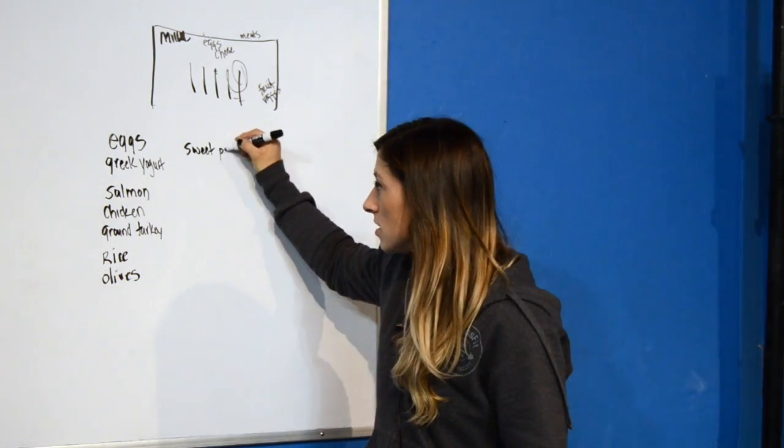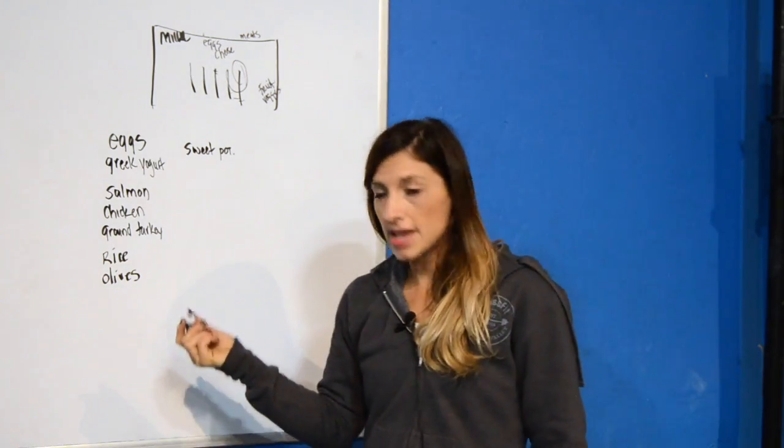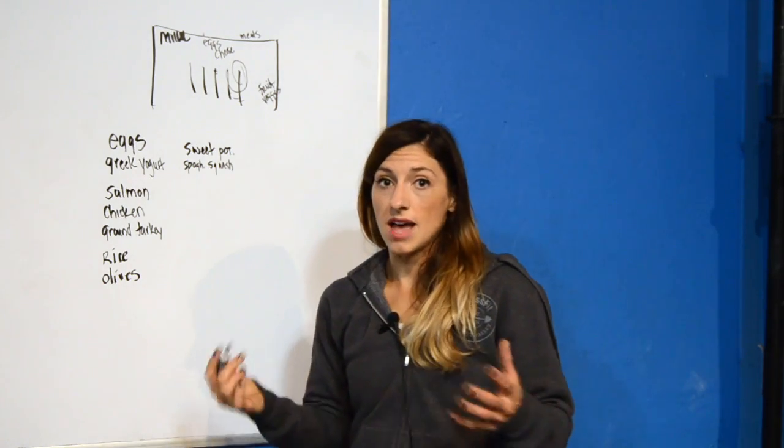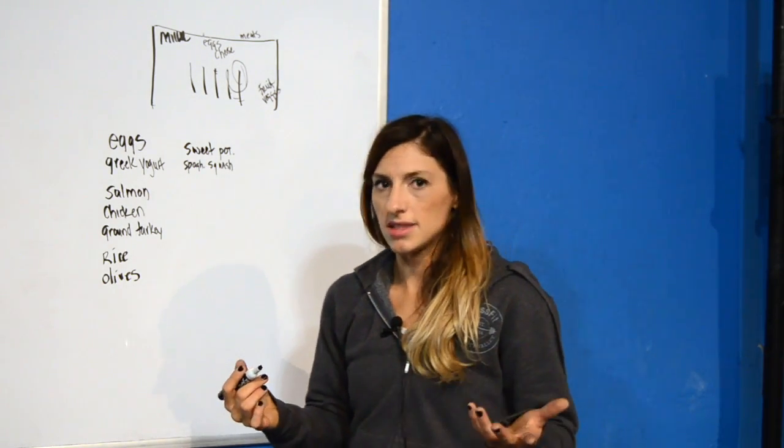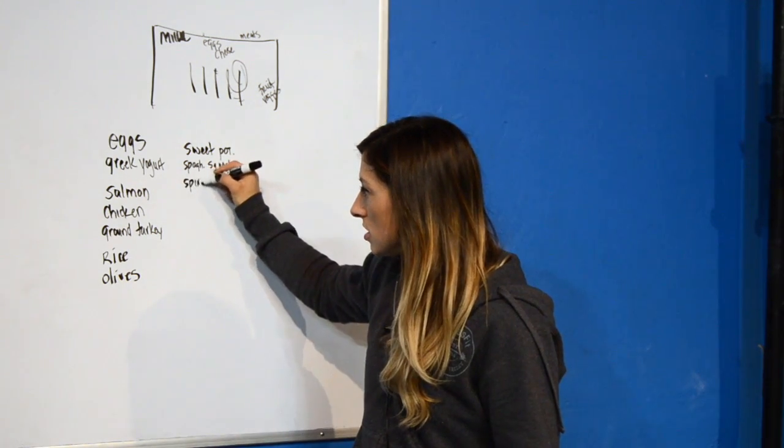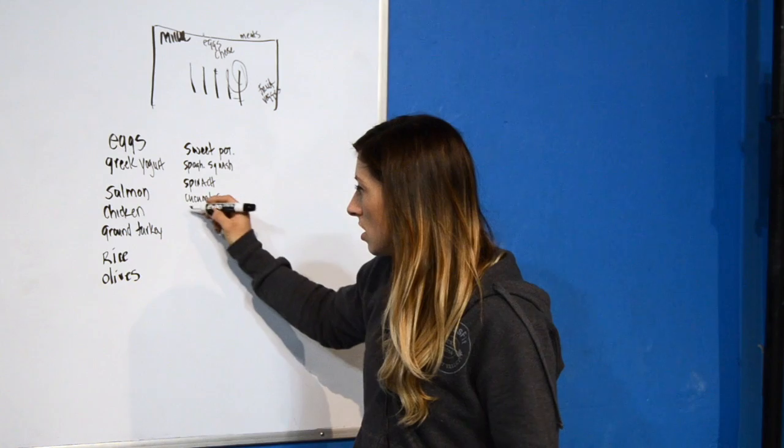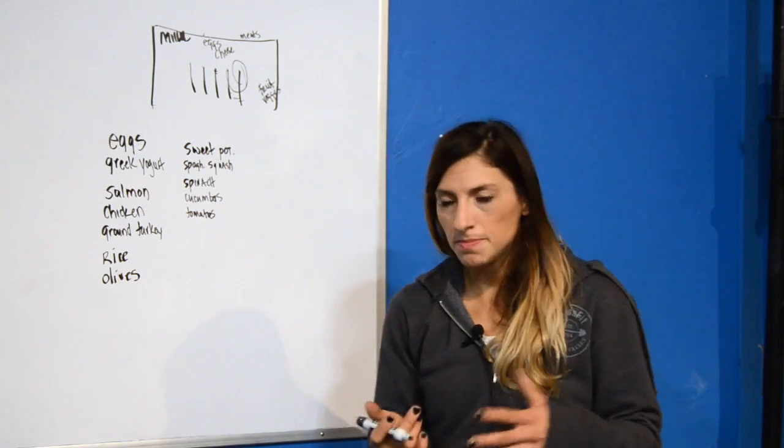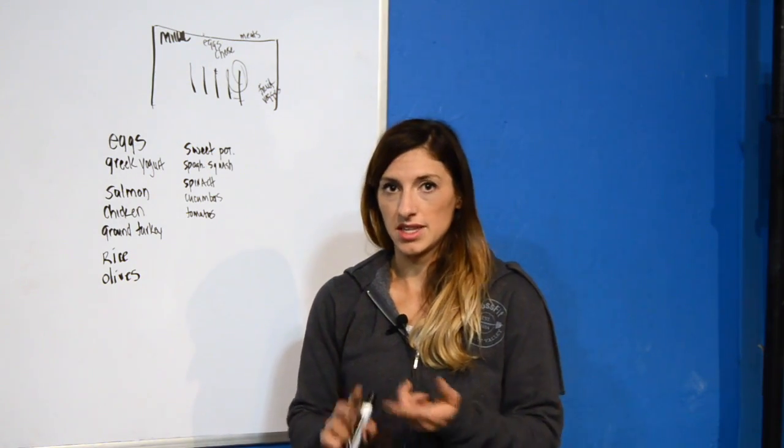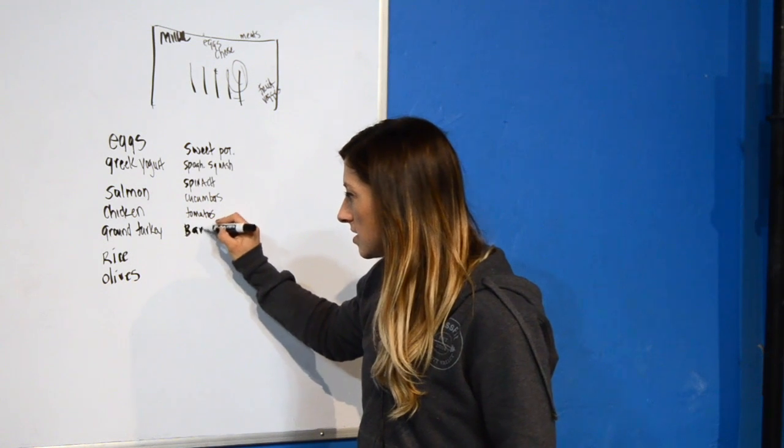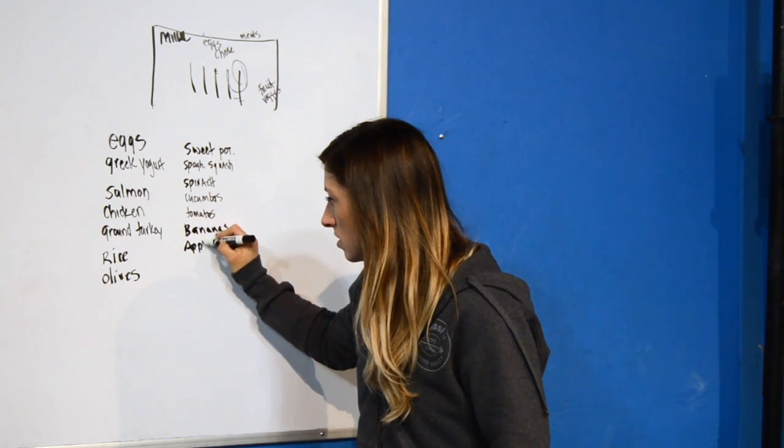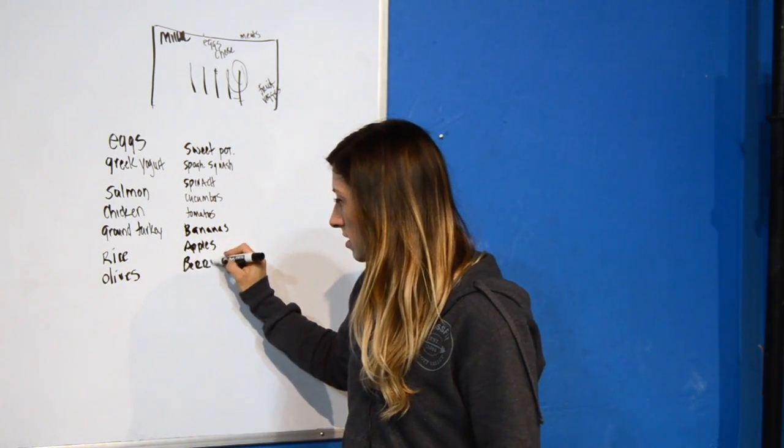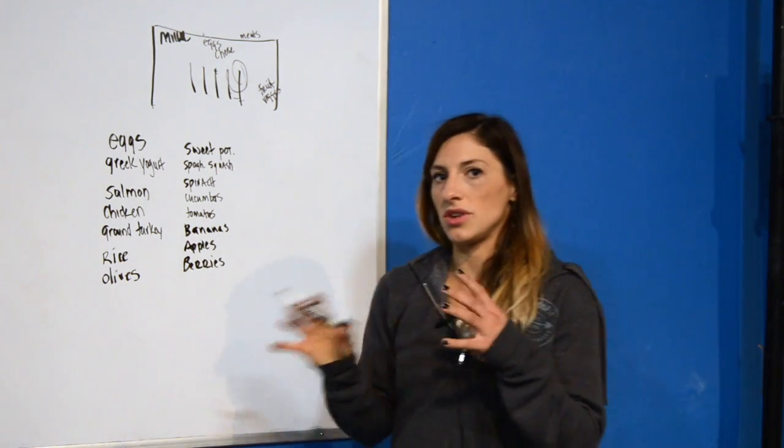We're going to do spaghetti squash for our meal on Friday. And then I know we did a lot of salads, grilled chicken salad and I think a salmon salad. So I'm going to need spinach, cucumbers, maybe some tomatoes, any additional veggies you might want in your salad. We also had specific fruits, bananas and apples specifically. So I'm going to put bananas, apples, I'll put berries down. I think we had that on there.